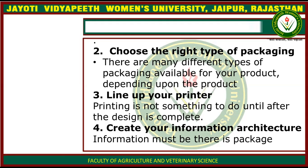The fourth step is to create the creative information architecture. You will put all essential information into the packaging material — for example, how much nutrient the product contains, how much weight or how many grams, the price and MRP, and the best before or use-by date. You will line up all the essential information required on your packaging.